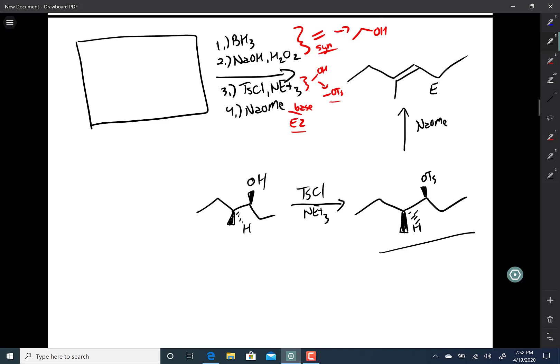Okay, what hydroboration does is it takes an alkene and adds H and OH across that alkene, and it does so in a syn fashion. And so to figure out exactly what alkene we need, we need to redraw this molecule.